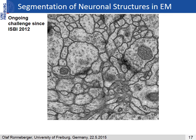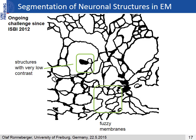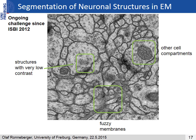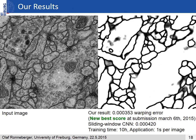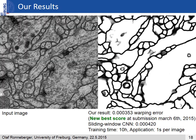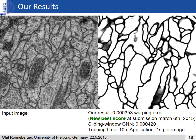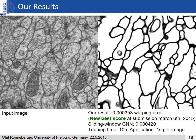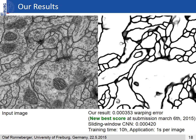We trained the UNET for the segmentation of neuronal structures in electron microscopy. The challenges in this dataset include structures with very low contrast, fuzzy membranes, and other cell compartments. We achieved a new best score in terms of the warping error, which was much better than a sliding window convolutional neural network. Furthermore, our network is very fast — the training time was only 10 hours and the application takes about one second per image.